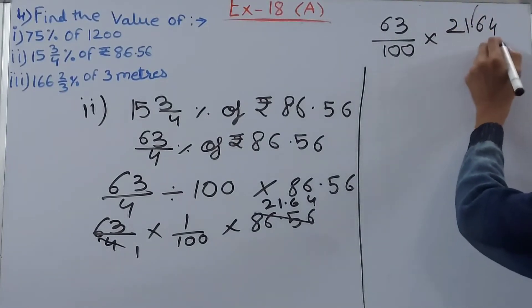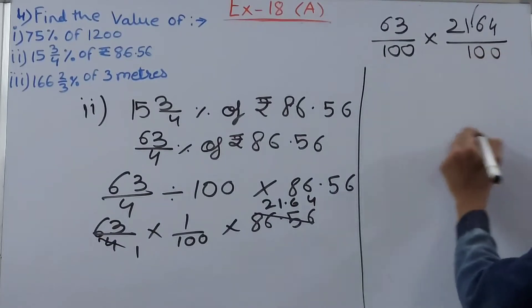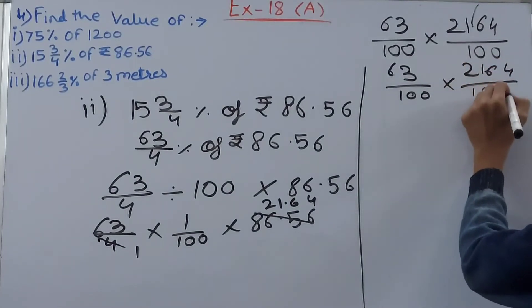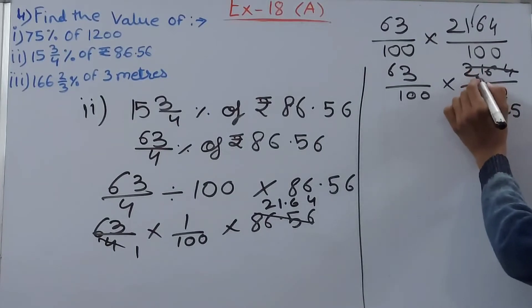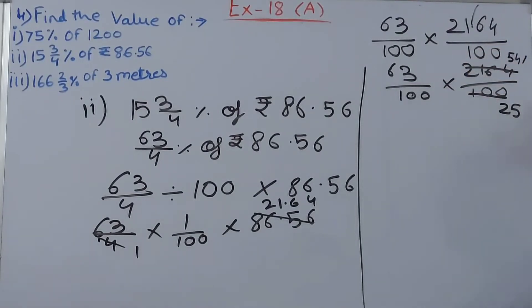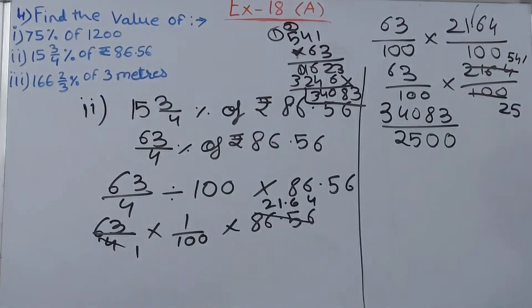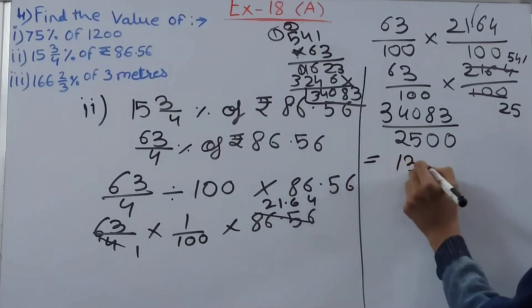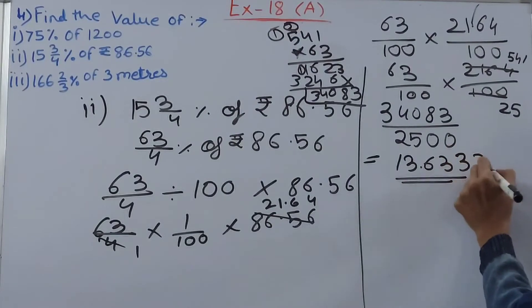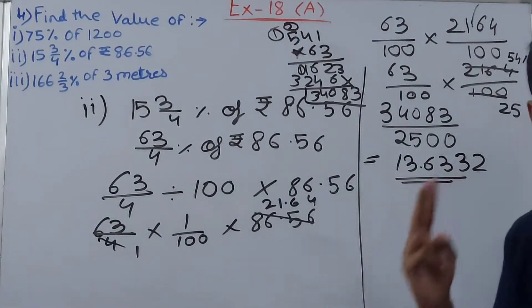We have 63 upon 100 into 2164 with the decimal point here. I'll shift the decimal two places, so upon 100 this becomes: 63 upon 100 into 2164 upon 100. You can solve this: 64 becomes 54, then 541. Now can this be cancelled by any number? 541 divided by 25, so 5. We get 34,083 upon 2500. These are big numbers and they cannot be simplified, so you can do the division. I've already done it on the calculator.